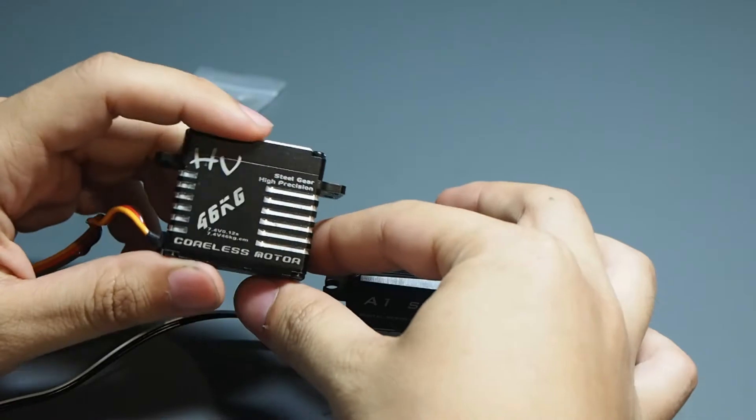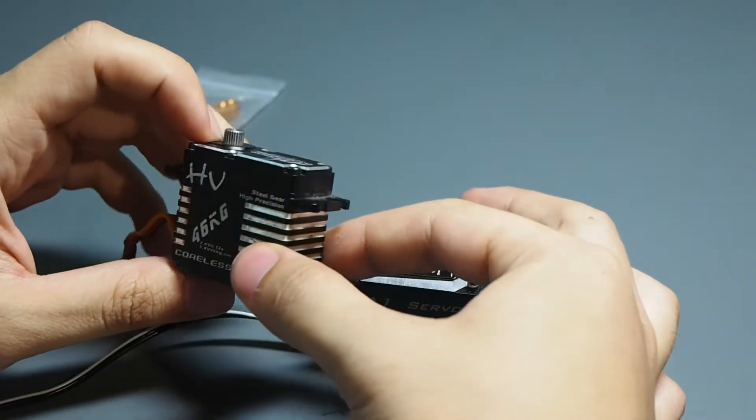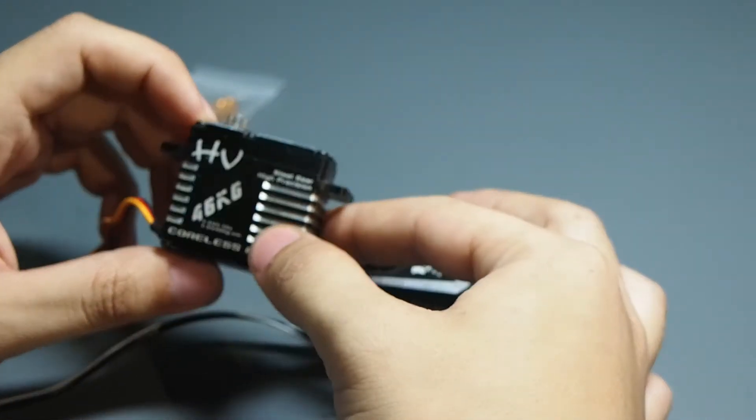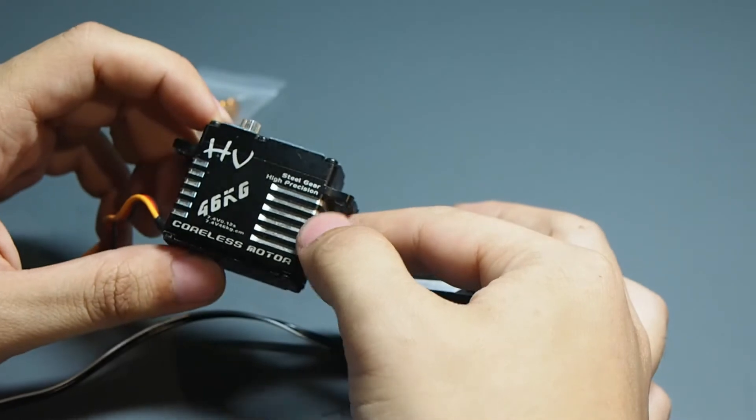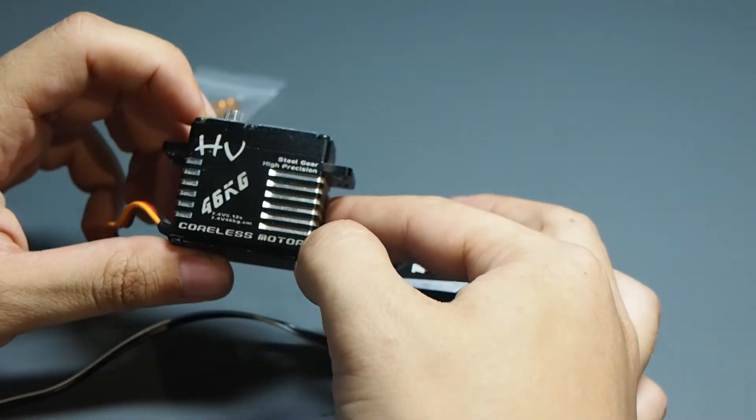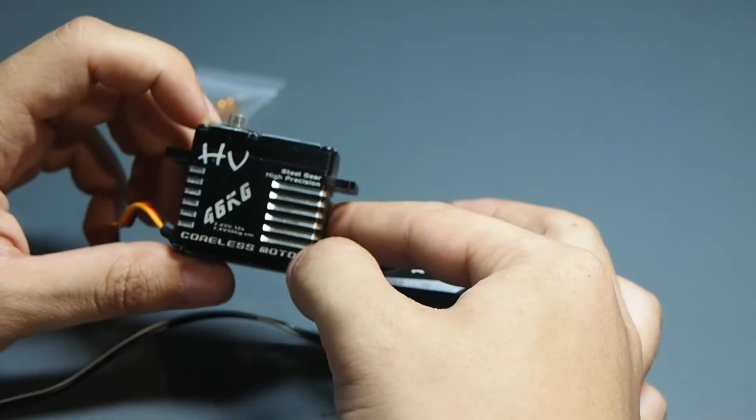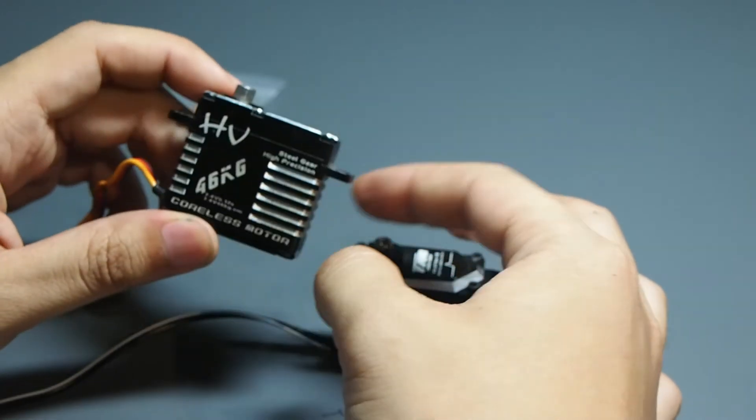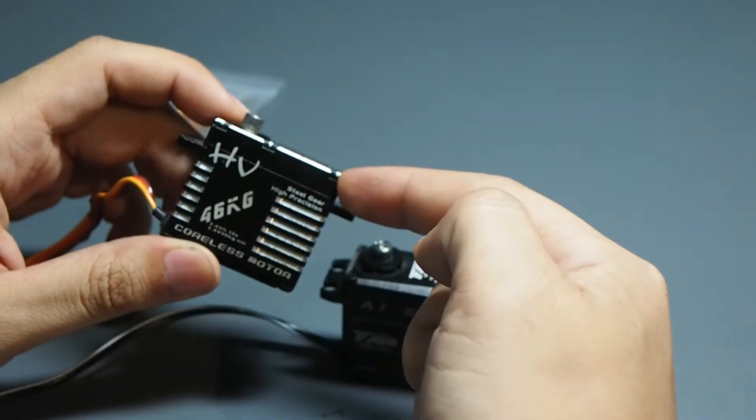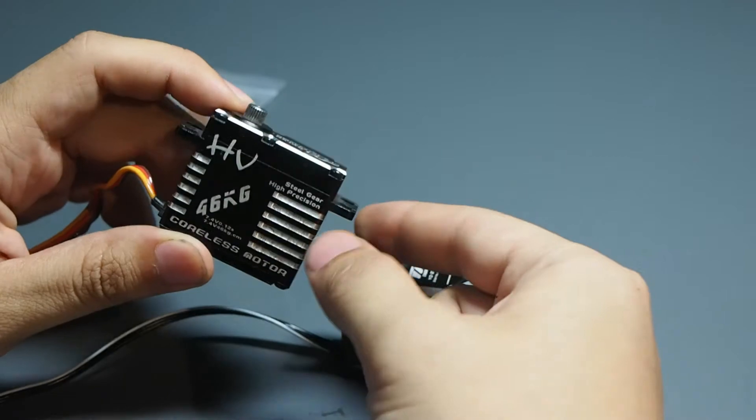So this popular JX servo, it has a very good price. It's about like 50 bucks or 45 for the coreless version and the brushless version is only like maybe 60. But I think there are issues or I guess reasons why it's so cheap.